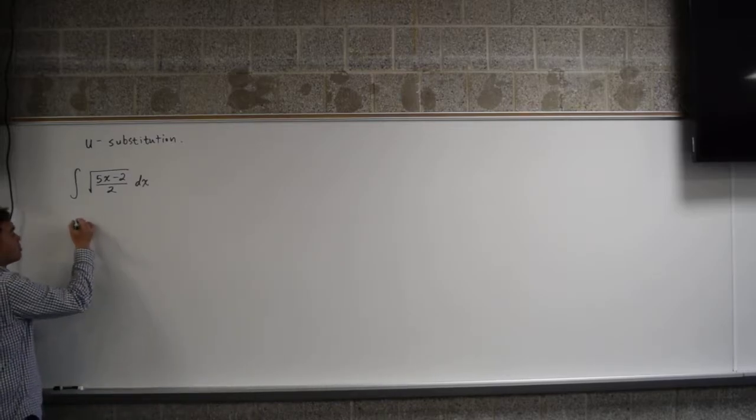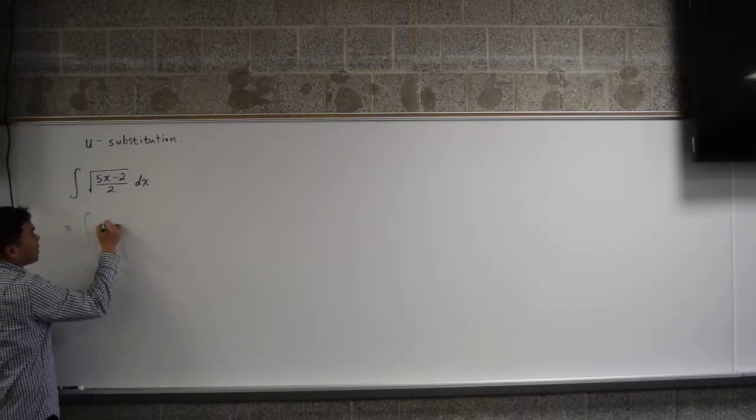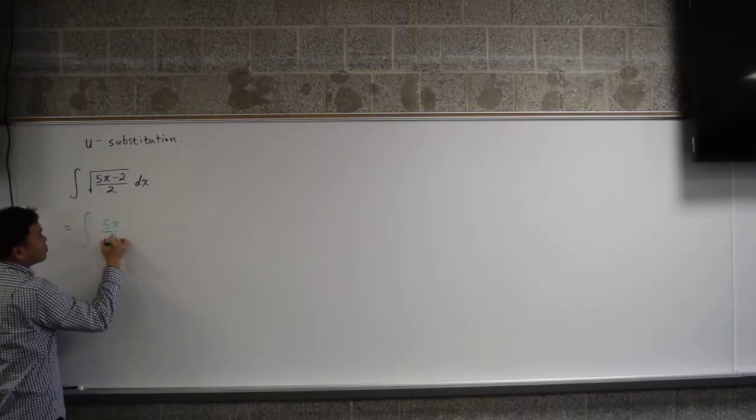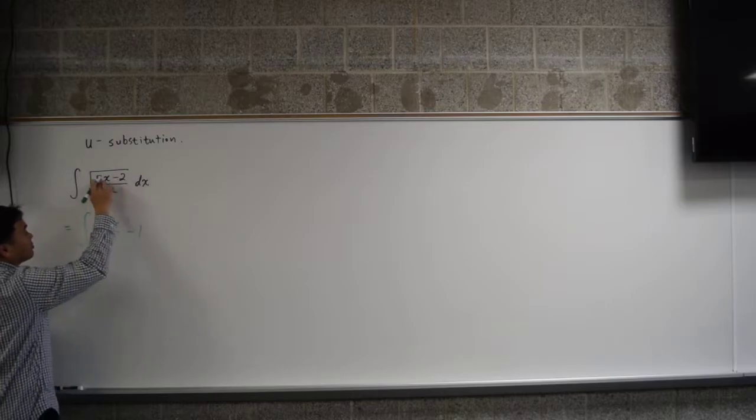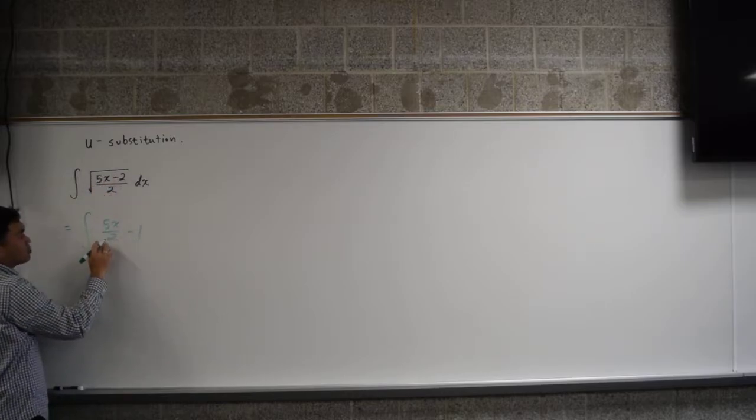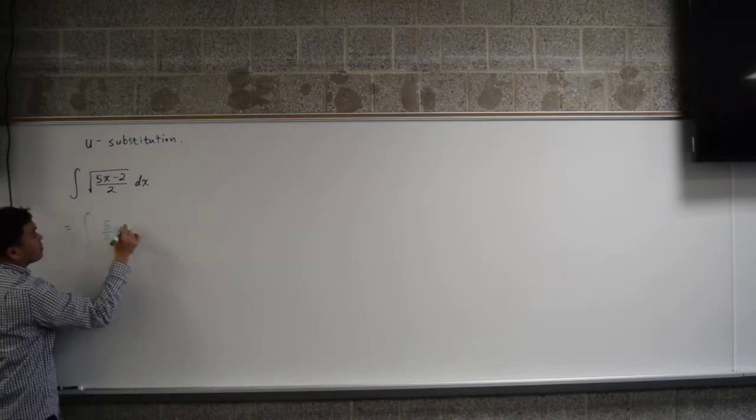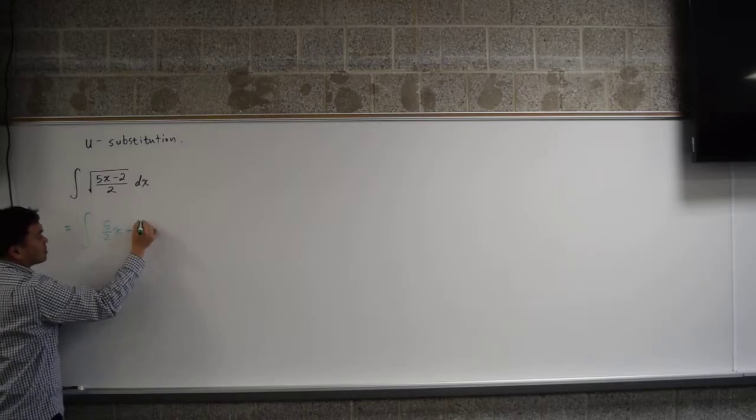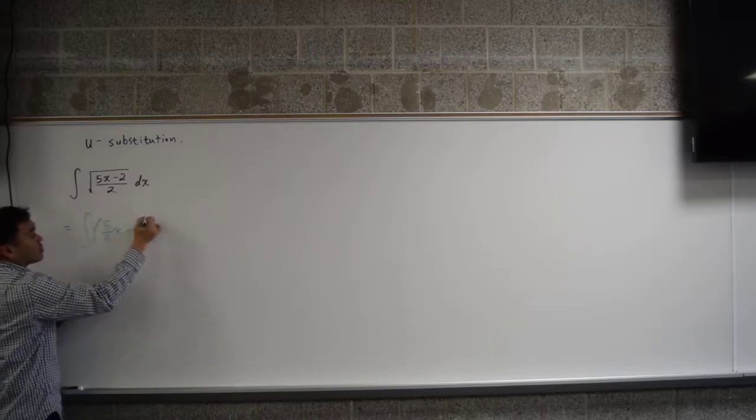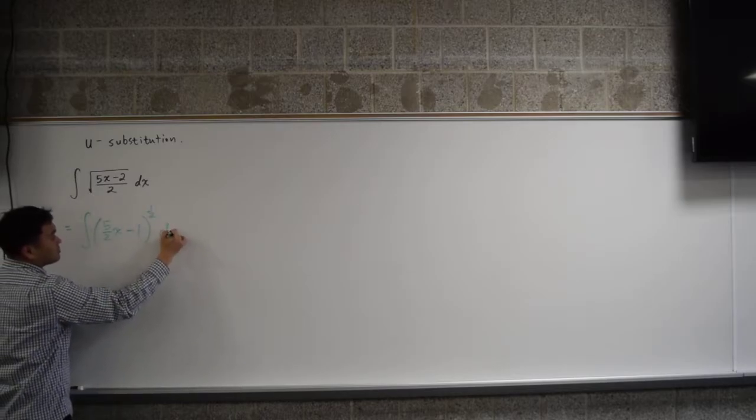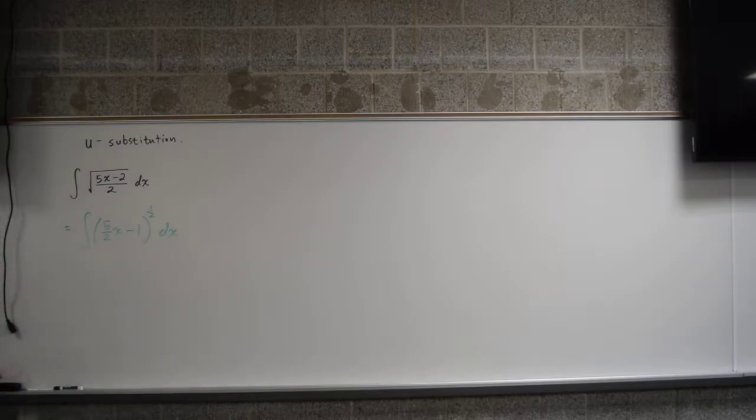I will write it as 5x over 2 minus 1, because 5x divided by 2 is 5x over 2, or even I would say 5 over 2 times x minus 2 over 2, that's 1. And the square root can be written as 1 half.